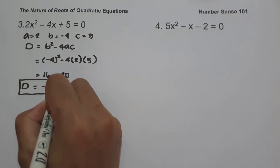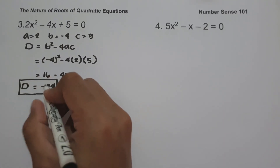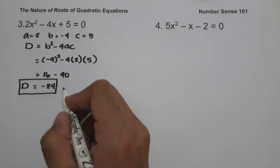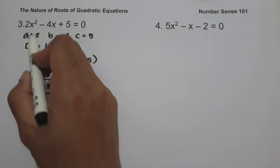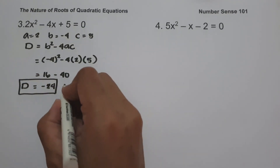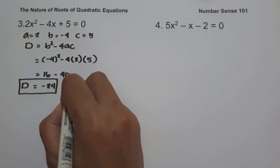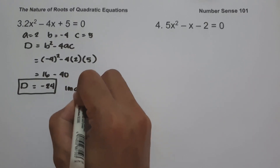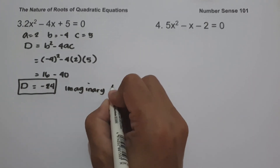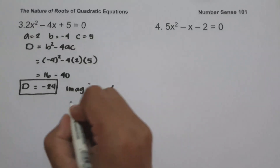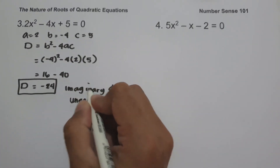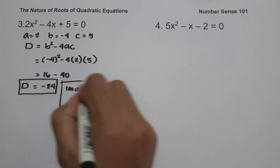Since the discriminant is less than 0, or it is a negative number, therefore the roots of 2x squared minus 4x plus 5 equals 0 are imaginary and unequal. And this will be our answer.